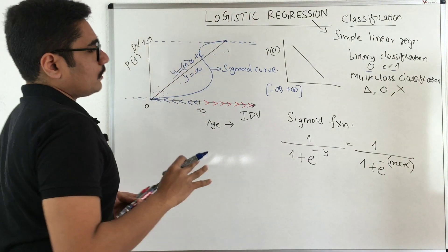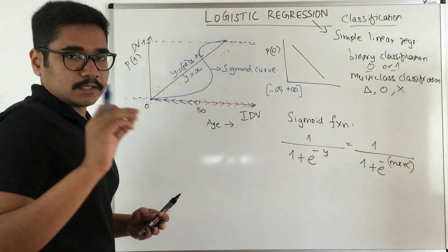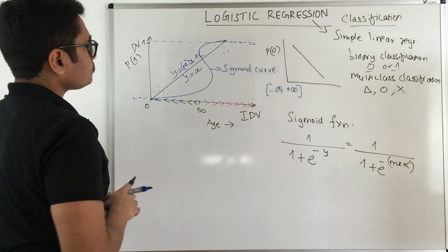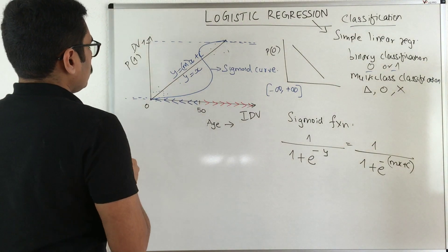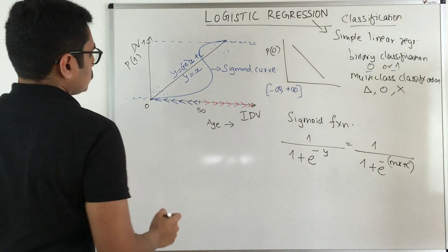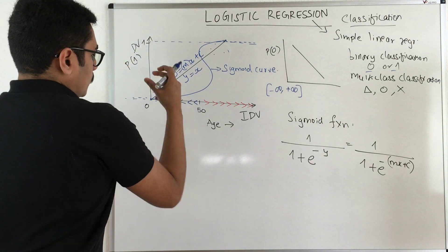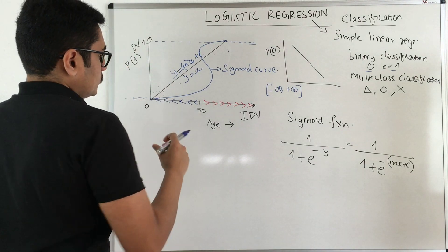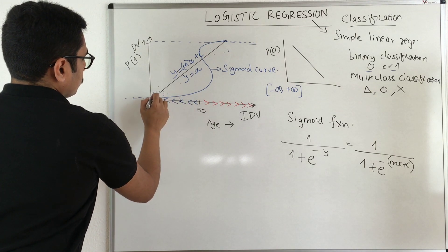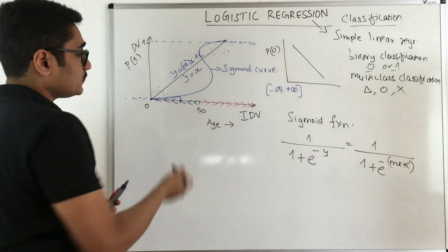This is essentially what logistic regression is, and we mainly use a log function here for calculating the error. For that particular age group, you can draw a line and see that the probability of suffering from that disease is very low — and that is actually true.